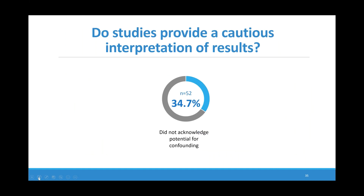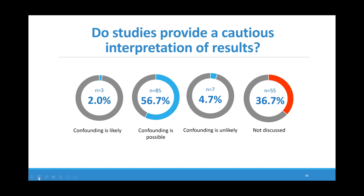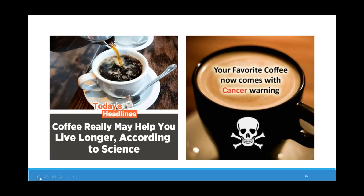We also investigated how authors interpreted their results given the potential for residual confounding. We found that a third of studies didn't acknowledge the potential for residual confounding in their discussion, and over a third didn't discuss the likelihood of confounding bias. Overall, these results suggest a low level of appreciation for confounding. This is a problem because non-randomized studies, particularly nutritional epidemiology studies, are too often misconstrued by readers and sensationalized by the media. More conspicuous consideration of residual confounding bias in reports may lead to more cautious interpretation of findings by readers.